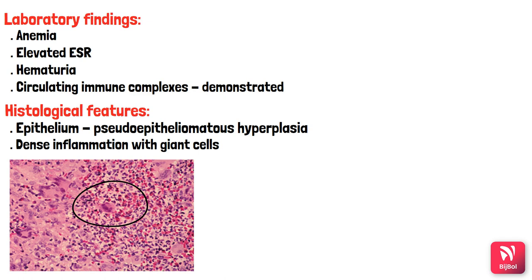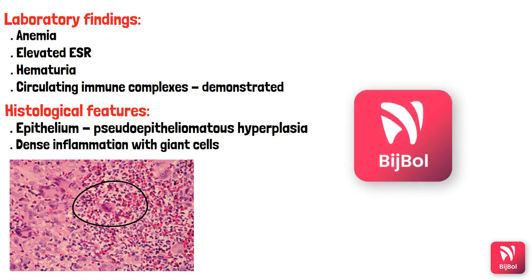In summary, this topic covered recurrent aphthous stomatitis (canker sores) — three types, characteristic Anishkow cells; Behçet's syndrome — oral, genital, and ocular ulcers; sarcoidosis — granulomatous disease without caseation; angioedema — diffuse swelling of skin, mucosal, and submucosal connective tissues; and Wegener's granulomatosis — involving vascular, renal, and respiratory systems.